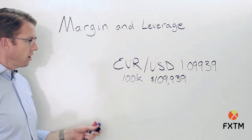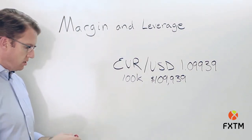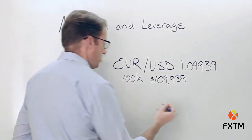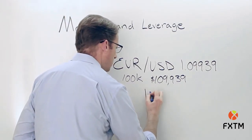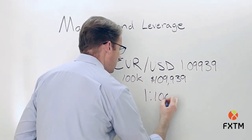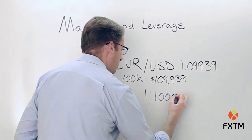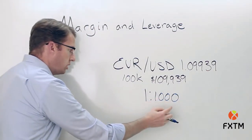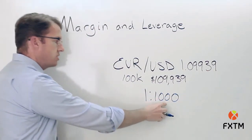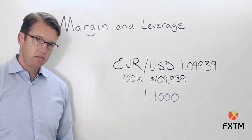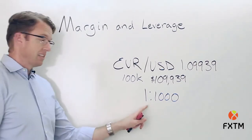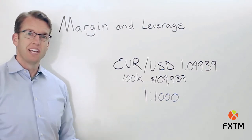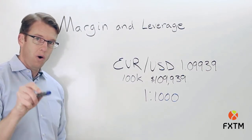If our leverage ratio is 1 to 1,000, that means that for each dollar of margin we're controlling a thousand dollars worth of notional value. So if we were to take 1 and divide it by 1,000, we would get 0.001.